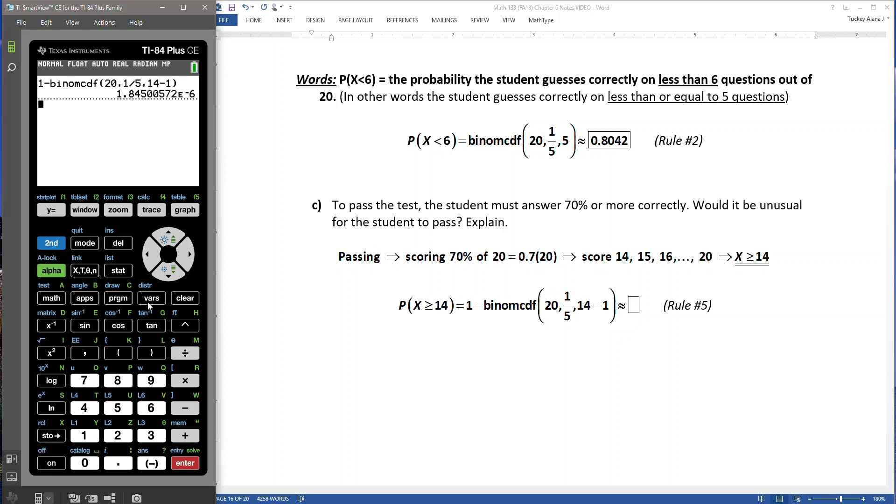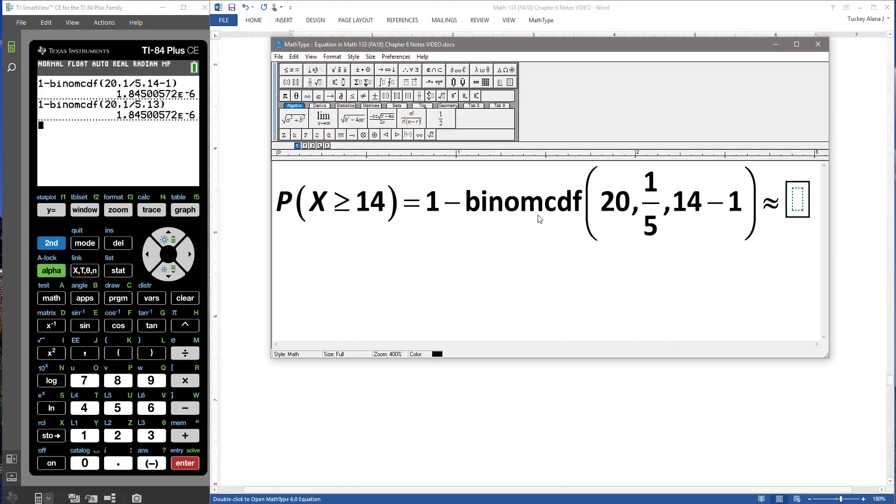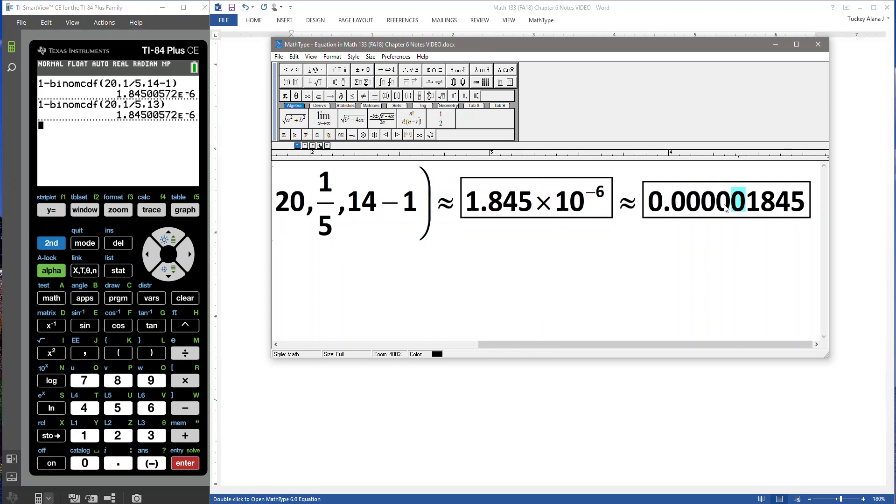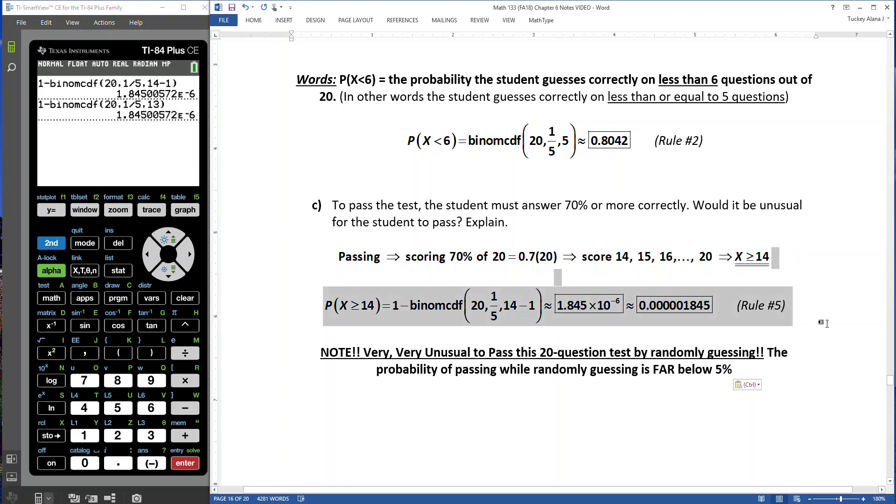Let's see. Hit 1 minus, go to second distribution, hit letter B, 20, 1 fifth. Here I want 14 take away 1, in other words I want 13. That's scientific notation, right? That is 1.84 with e negative 6 means the decimal place is 6 places to the left. If I move it 6 places to the left, I'd have the 1, and then 5 zeros. That is extremely unusual. If you have learned nothing else today, learn that you should never randomly guess on a 20-question test. Because your chances of passing are well below 5%. As a matter of fact, it's below 1%. This is very, very, very unusual. You would not want to randomly guess on a test like this because you're not going to pass. Passing would be very difficult.